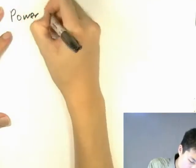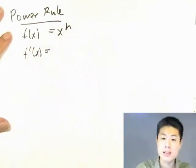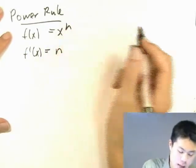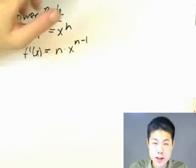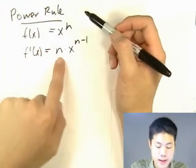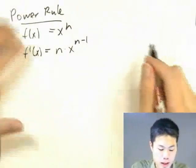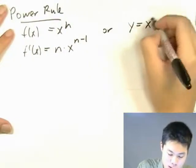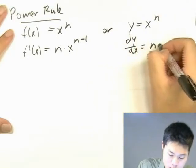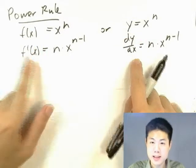Now for the fun part — the shortcut called the power rule. If f of x equals x to the nth, then f prime of x equals n times x raised to the n minus 1 power. You take whatever is in the power, bring it down as a coefficient, and subtract 1 from the power. Equivalently, if y equals x to the nth, then dy over dx equals n times x to the n minus 1. Same rule, just different notations.